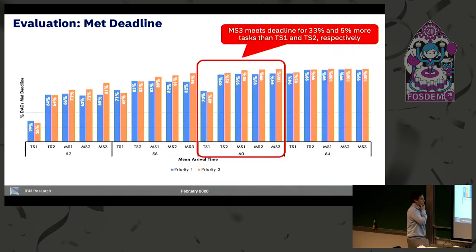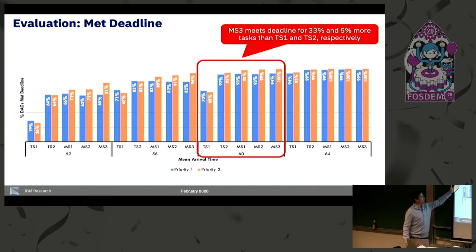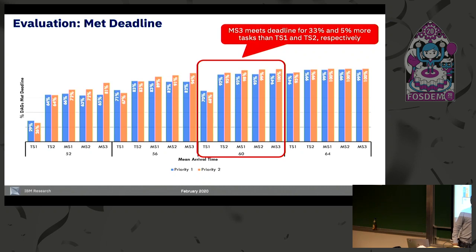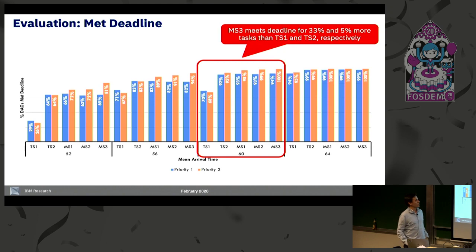The results show what we expected. MS3 is the most interesting of the five policies — it allows DAGs to complete on time in the most cases. This chart shows the percentage of DAGs, or radio flow graphs, that complete within their deadline as a function of the five policies for different DAG arrival rates. For example, MS3 allows 100% of the high-priority DAGs to complete within their deadline, compared to the other policies. Some simple tweaks can help us optimize the scheduling significantly.